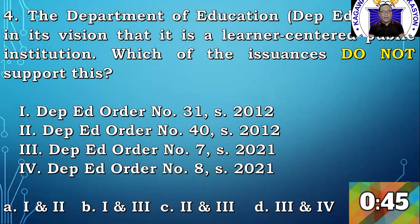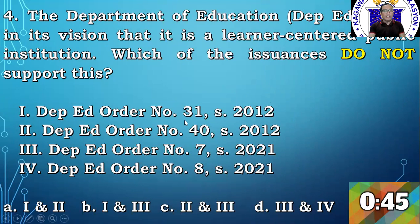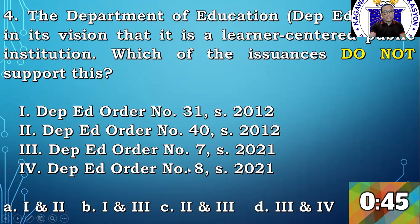Let's move on to question number 4. Which of the issuances do not support the learner-centered public institution? DepEd Order number 31 is a policy implementation on grades 1 to 10 on basic education curriculum — that's a yes, it's a check. DepEd Order number 40, series 2012, is Child Protection Policy — it's a learner-centered institution, check. DepEd Order number 7, series 2021, is about multi-year guidelines on PBB — more on benefits for DepEd employees, so that's an X. DepEd Order number 8, series 2021, talks about signatories in administrative and financial matters — also an X. So which ones do not directly support the learner-centered public institution? Numbers 3 and 4. The answer is letter D.